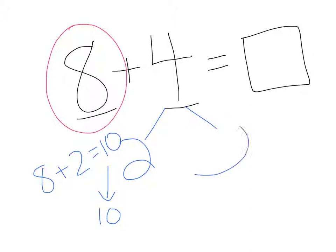Now, we have to figure out what plus 2 makes 4. 2 is left over, so we bring it down also.